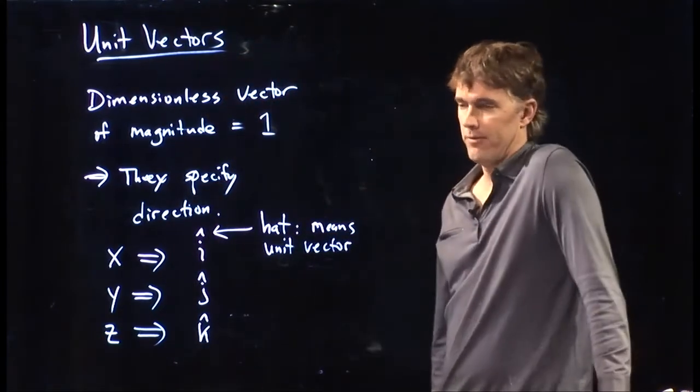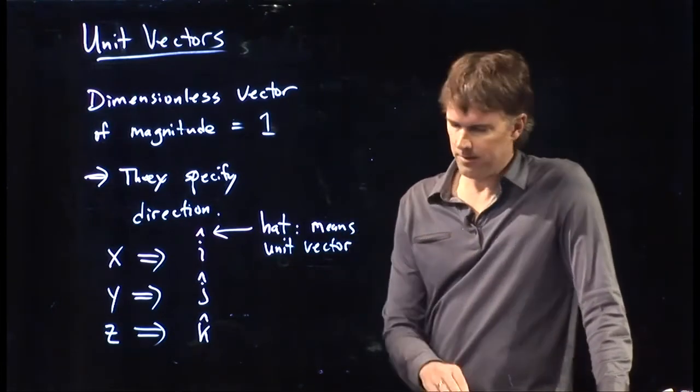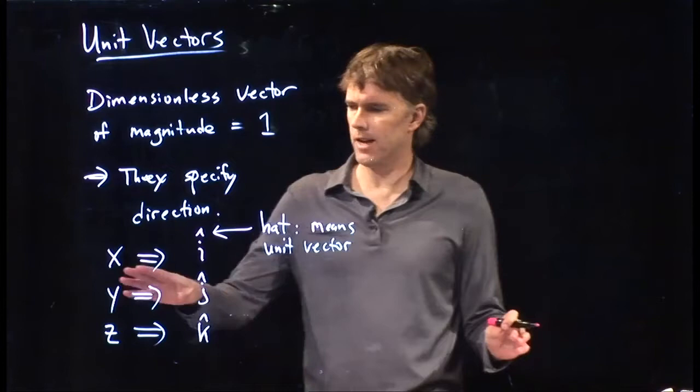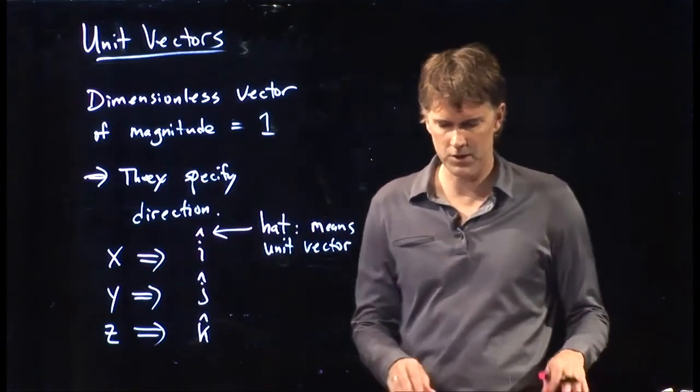So it is a vector, but it only has magnitude 1. Alright, so anytime you're along the x-axis, you're going to use an i-hat. Anytime you're along the y-axis, you're going to use a j-hat.